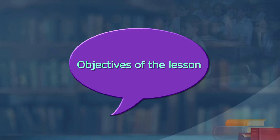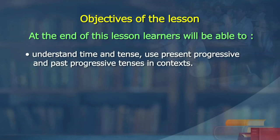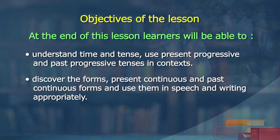Let us not go into understanding the rules now, but let us know what we are going to do in this lesson. Let me ask you, Krithi, for the benefit of the learners, let us read the objectives of this lesson - what are we expecting the learners to do at the end of this lesson? Objectives of the lesson: at the end of this lesson, the learners will be able to understand time and tense, use present progressive and past progressive tense in contexts, discover the forms, present continuous and past continuous forms and use them in speech and writing appropriately.